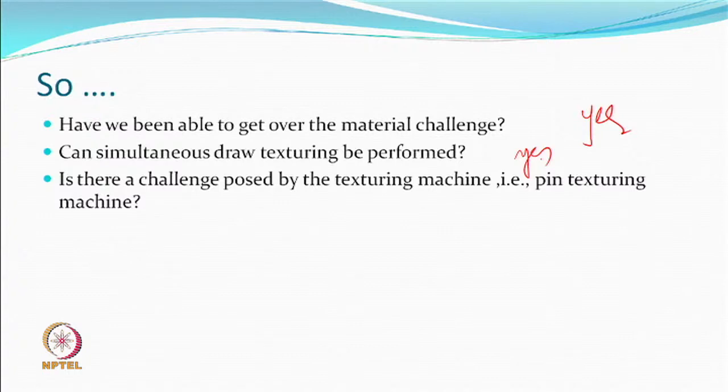When POY came into picture, the texturing machine being used was the pin texturing machine. With simultaneous draw texturing, we were aware that drawing speeds were higher — around 700 to 1000 meters per minute — while texturing speeds were not so high. Sequential draw texturing was abandoned, and the material challenge was addressed, but now there was a machine challenge with the pin texturing machine.